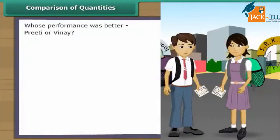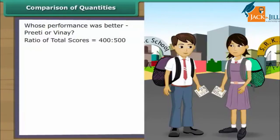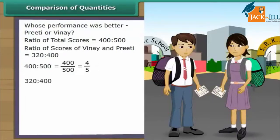Proportion. Earlier in this lesson, we heard Preeti and Vinay argue about their respective performances in the final exam. Let us sort their argument out with the help of proportion. Expressing the two total scores as a ratio: 400 is to 500. The scores of Vinay and Preeti expressed as a ratio: 320 is to 400. Reducing them to lowest terms, 400/500 = 4/5 and 320/400 = 4/5.